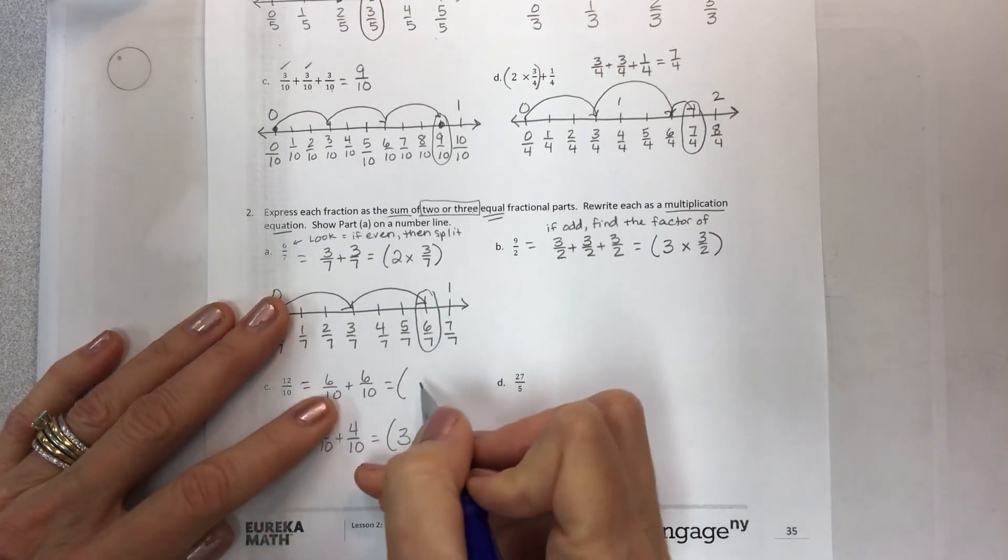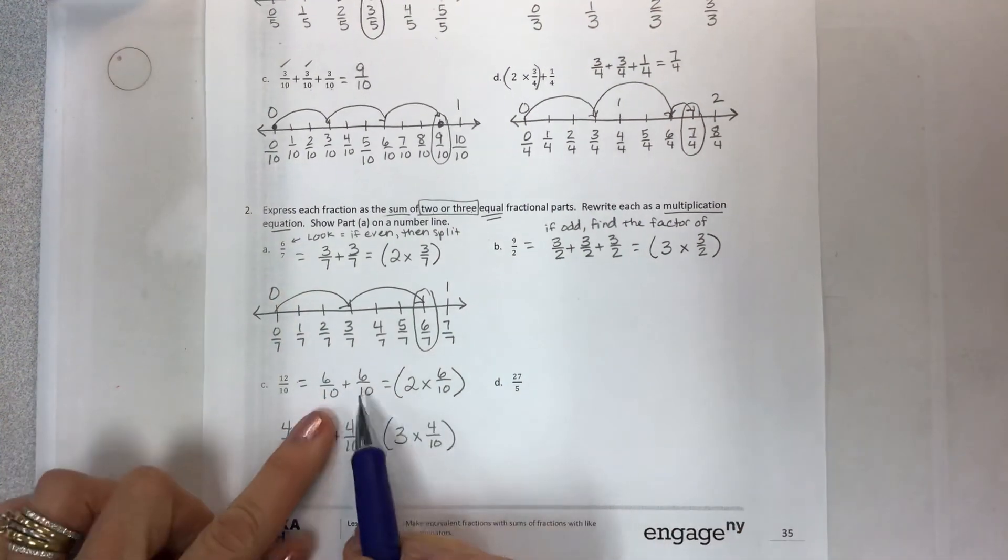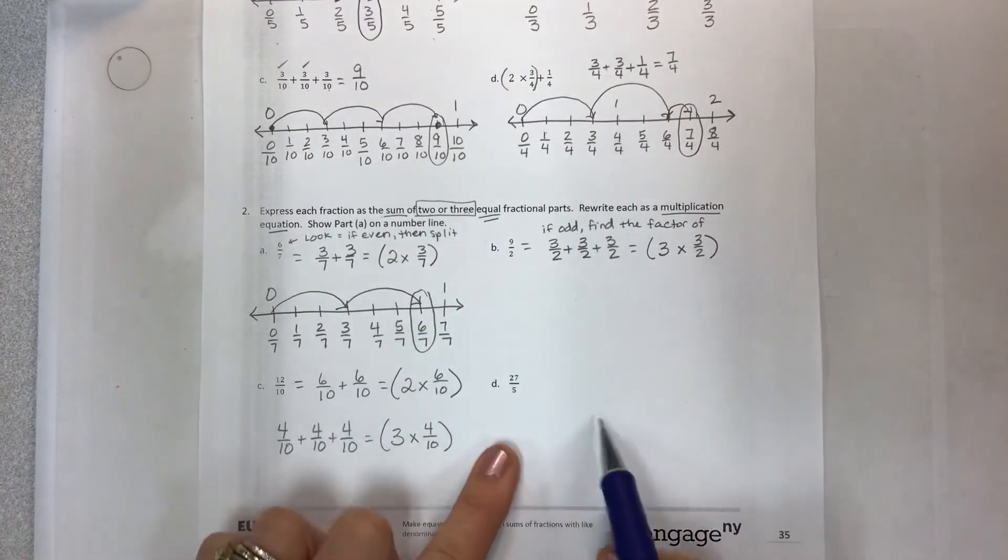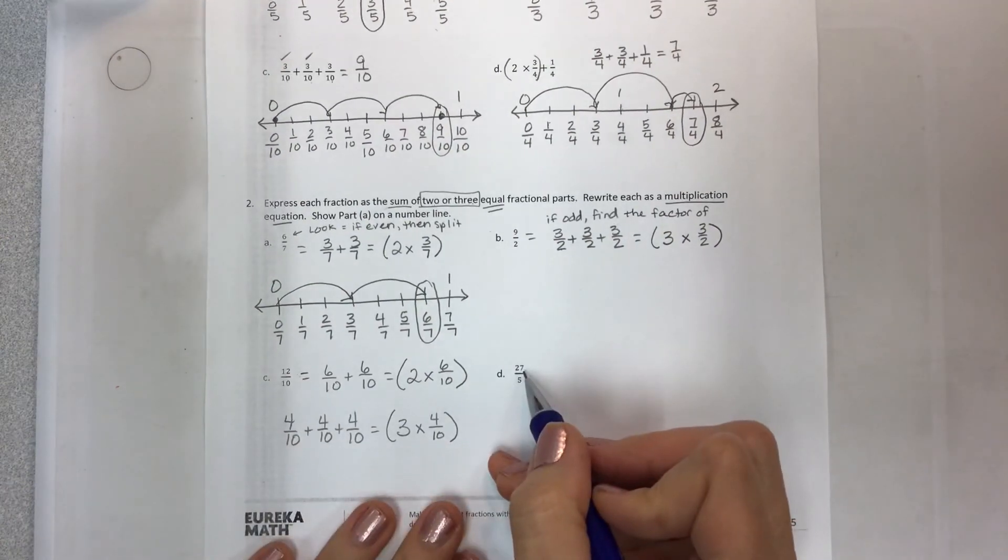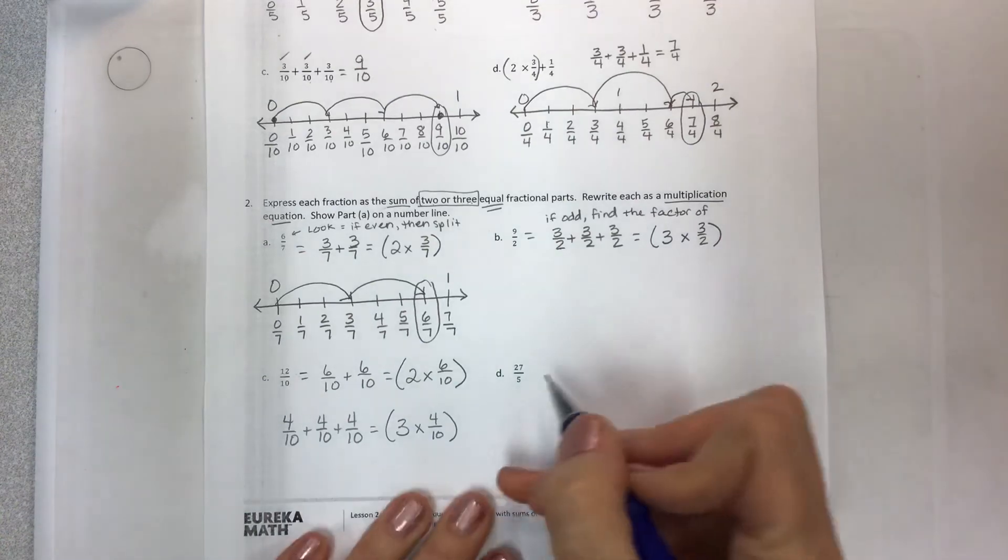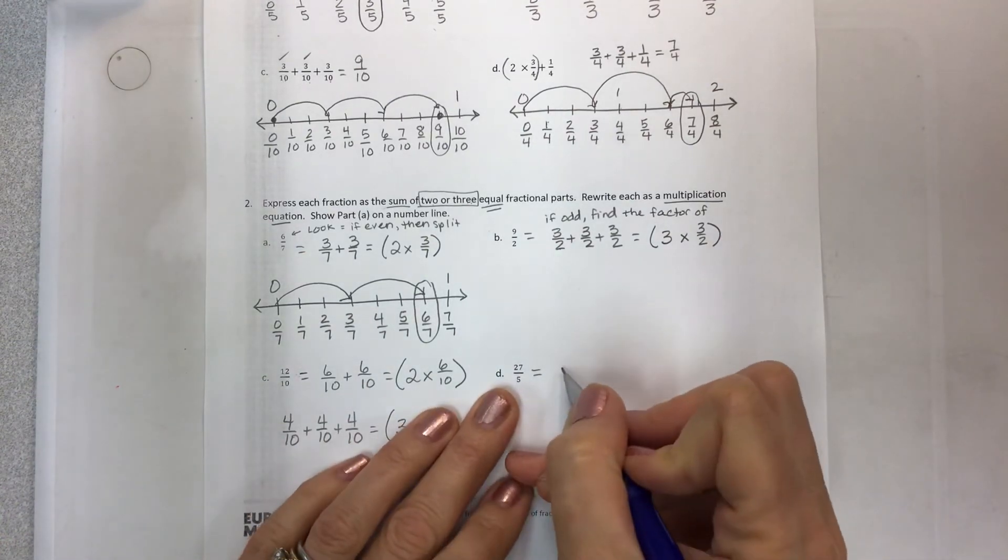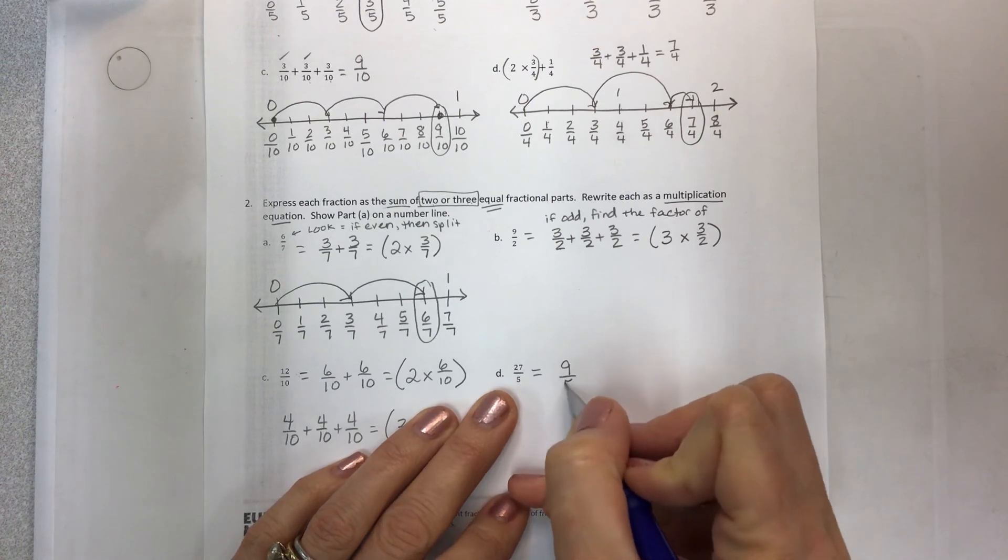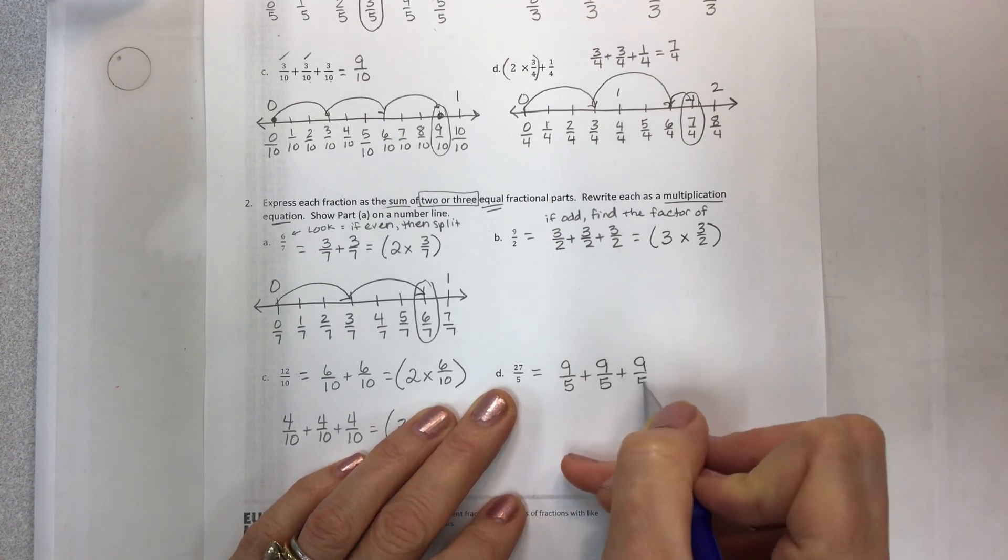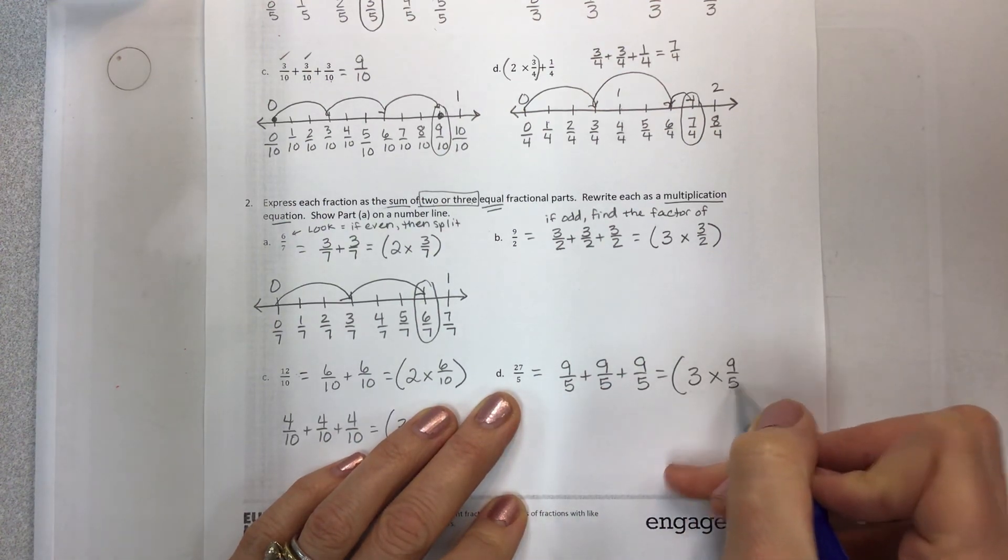And this one would be, of course, what? Two times six tenths because it's equal fractional parts. Two or three. And this one, here we have an odd number. So what evenly can be added up to get to 27? And that is going to be, if you know your times tables, nine fifths plus nine fifths plus nine fifths, because that is three times nine fifths.